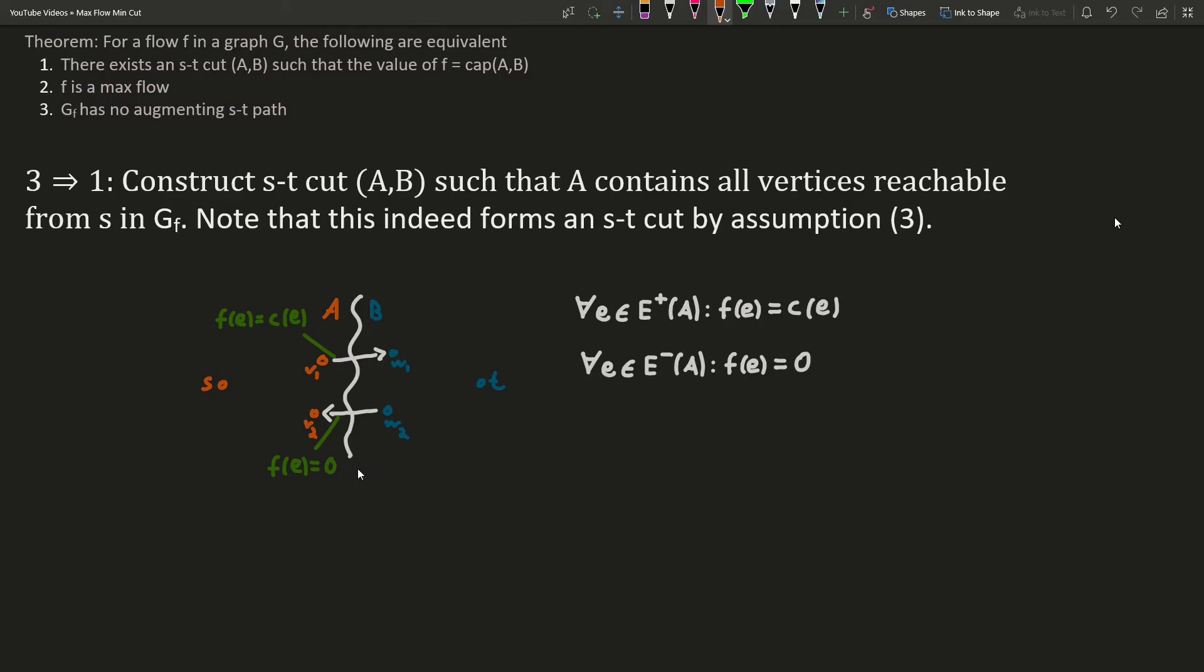I've sketched out the cut here again. The critical observation is that all edges going from A to B must be saturated, because if they weren't, then the endpoint would actually be in A by construction, because W1 would be reachable from the source, and we put all vertices reachable from the source into A.